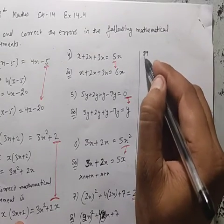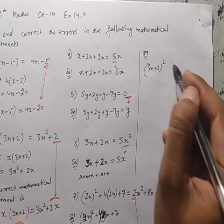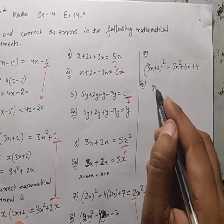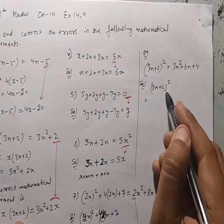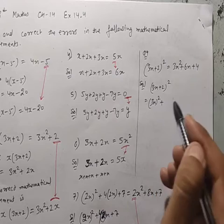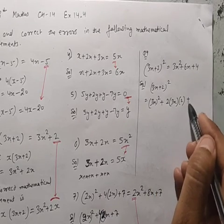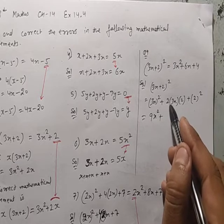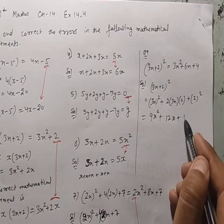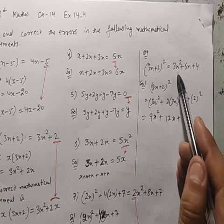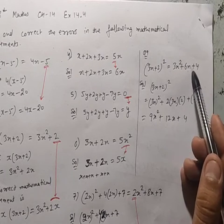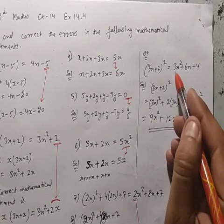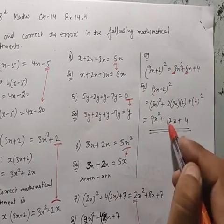Question 9: (3x+2)² = 3x²+6x+4 is given. Solution using identity (a+b)² = a²+2ab+b²: (3x+2)² = (3x)²+2×3x×2+2² = 9x²+12x+4. So the correction is: replace 3 with 9, and 6 with 12. The correct statement is (3x+2)² = 9x²+12x+4.